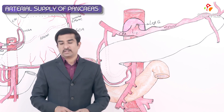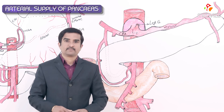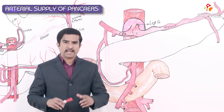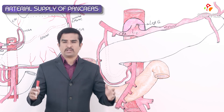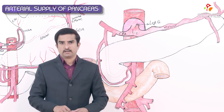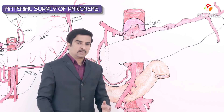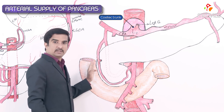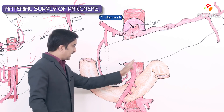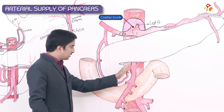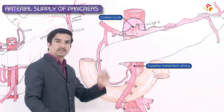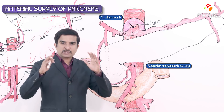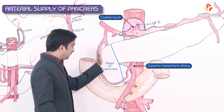The pancreas has a very rich arterial supply from the branches of the celiac trunk as well as from the branches of the superior mesenteric artery.